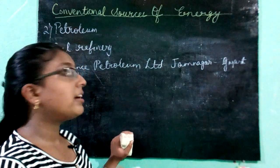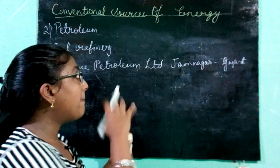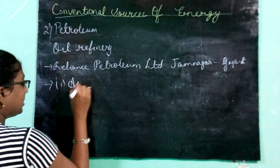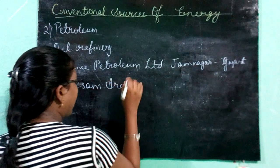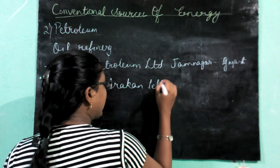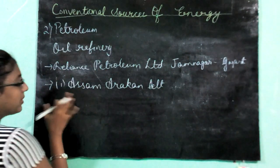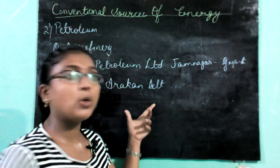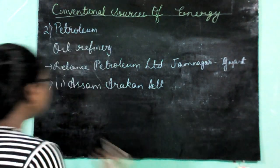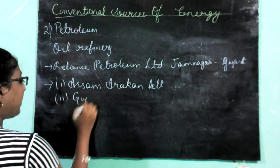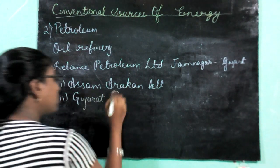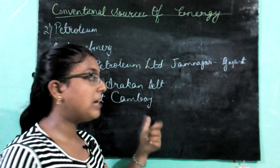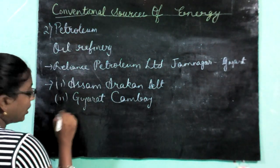Now, let's look at the distribution of petroleum in India. The first is the Assam-Arakan belt, located in the northeast region of India. The second is the Gujarat-Cambay belt, located in the western part of India. The third is Mumbai High, located in Maharashtra — specifically in the Arabian Sea near Mumbai.